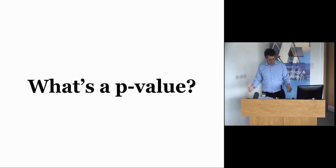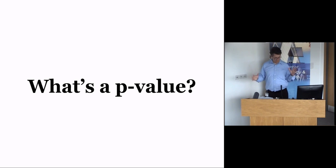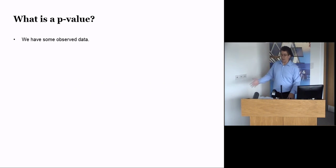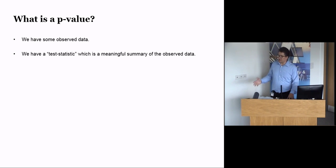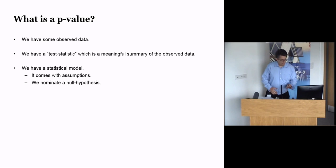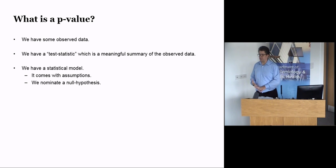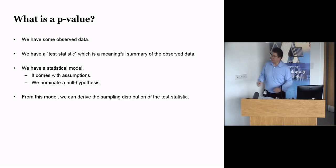So what is a p-value? You all know what a p-value is, but bear with me. First we need data. Second, we need a test statistic — something calculated from the data that has scientific meaning, like a difference in means or a proportion. Importantly, we need a statistical model, which at minimum includes a null hypothesis and assumptions about how our data are generated. Assumptions is a very important word.